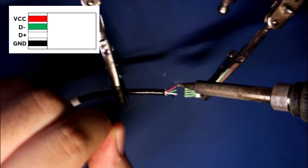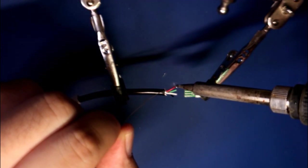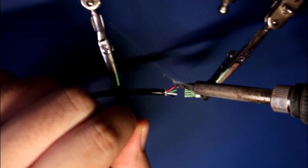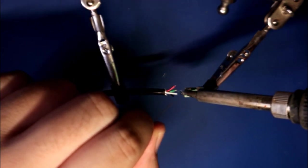All right, so I'm going to start off by tinning the wires first. I'm going to get some bare wire as well as some solder on it to make it easier for myself to put this together.